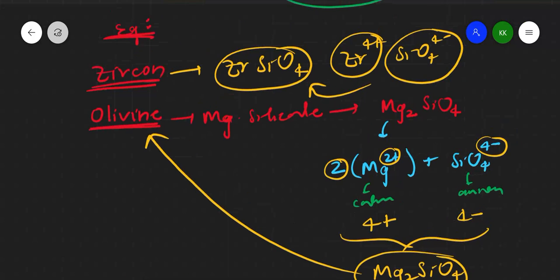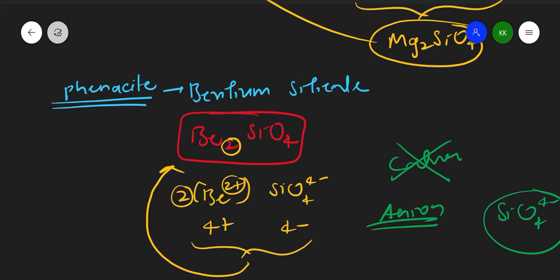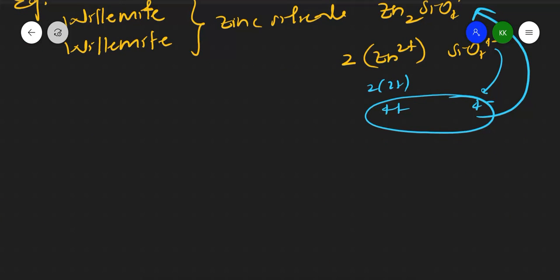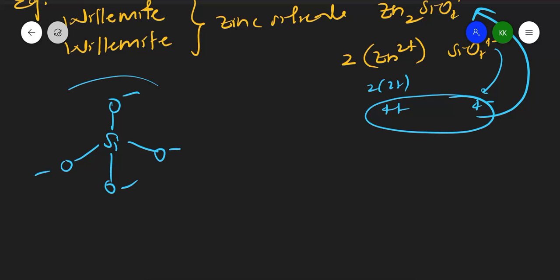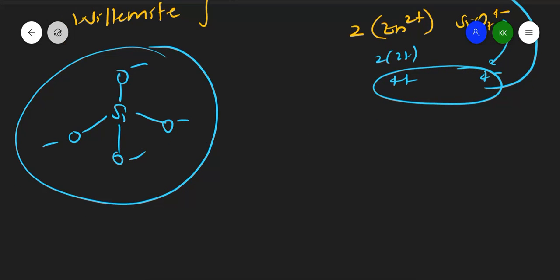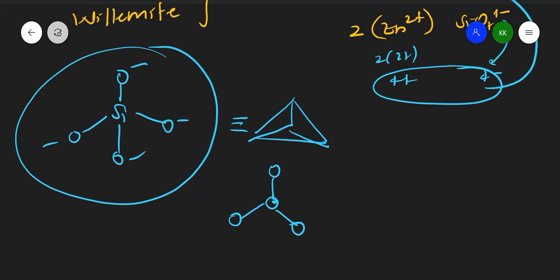To summarize, the examples of orthosilicates are: willemite (zinc silicate), phenacite (beryllium silicate), olivine (magnesium silicate), and zircon (zirconium silicate). In orthosilicate, no oxygen is shared between any SiO4 units. In the next class we will discuss pyrosilicate. Take care and have a great day.